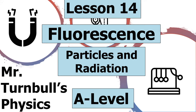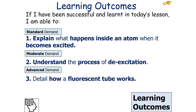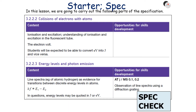Hello and welcome to today's lesson on fluorescence, which is part of the particles and radiation topic in AQA A-level physics. In today's lesson, our primary aim is to look at describing how fluorescent tubes work. If we've been successful, we should be able to explain what happens inside an atom when it becomes excited, understand the process of de-excitation, and detail how a fluorescent tube works — part of the AQA A-level physics specification in the particles and radiation section.